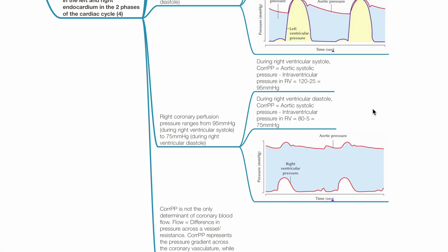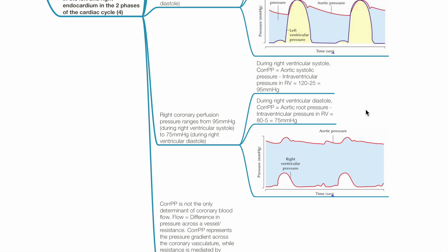The right coronary perfusion pressure ranges from 95 mmHg during right ventricular systole to 75 mmHg during right ventricular diastole. During right ventricular systole, coronary perfusion pressure equals 120 minus 25, which equals 95 mmHg. During right ventricular diastole, coronary perfusion pressure equals 80 minus 5, which equals 75 mmHg.